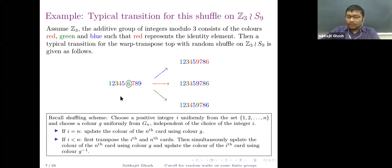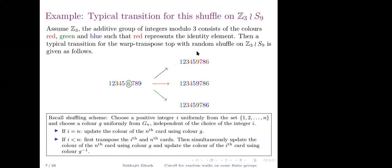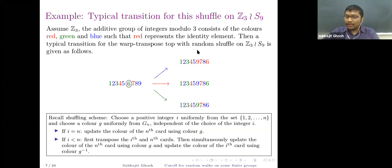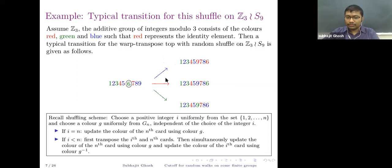A discrete-time Markov chain on a finite state space Ω is a sequence of random variables satisfying the Markov property: P(X_{t+1} = y | X_t = x, history) = P(X_{t+1} = y | X_t = x). The transition matrix M has rows and columns indexed by Ω, with entry M(x,y) = P(chain moves from x to y in one step). If the initial distribution is π_0 (a row probability vector), the distribution after t transitions is π_0 · M^t.